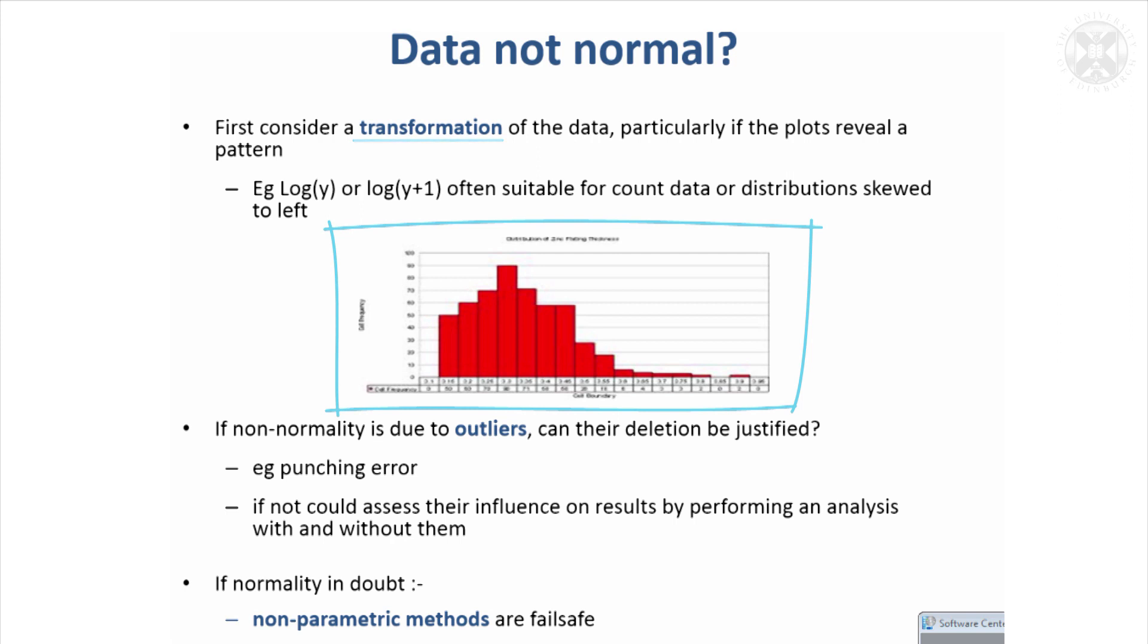You sometimes find that will transform the histogram so it's got a more symmetrical distribution. That might be one way around it. It might be that you've just got a few outliers. If you imagine it being symmetrical and having a few very large or very small values, they would be outliers and it's worth checking those to make sure they're right.